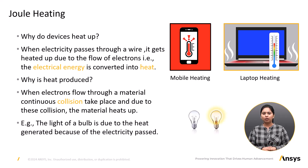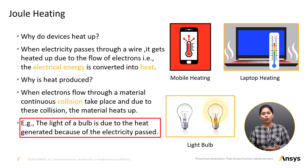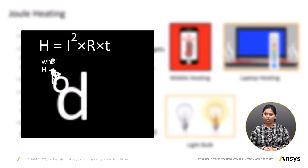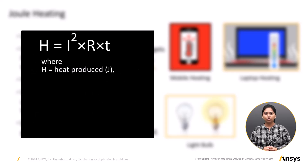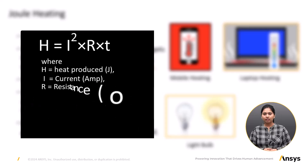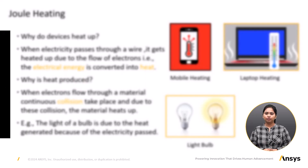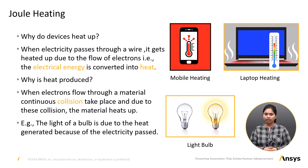The lighting of a bulb is a perfect example of how flowing electricity causes the filament to heat and the bulb to glow. The mathematical formula for Joule heating is H = I²RT, where H is the heat produced in Joules, I is the current in amperes, R is the resistance in the current-carrying conductor, and T is the time for which the current flows in the material. As a result of Joule heating, the overall temperature of the circuit increases.